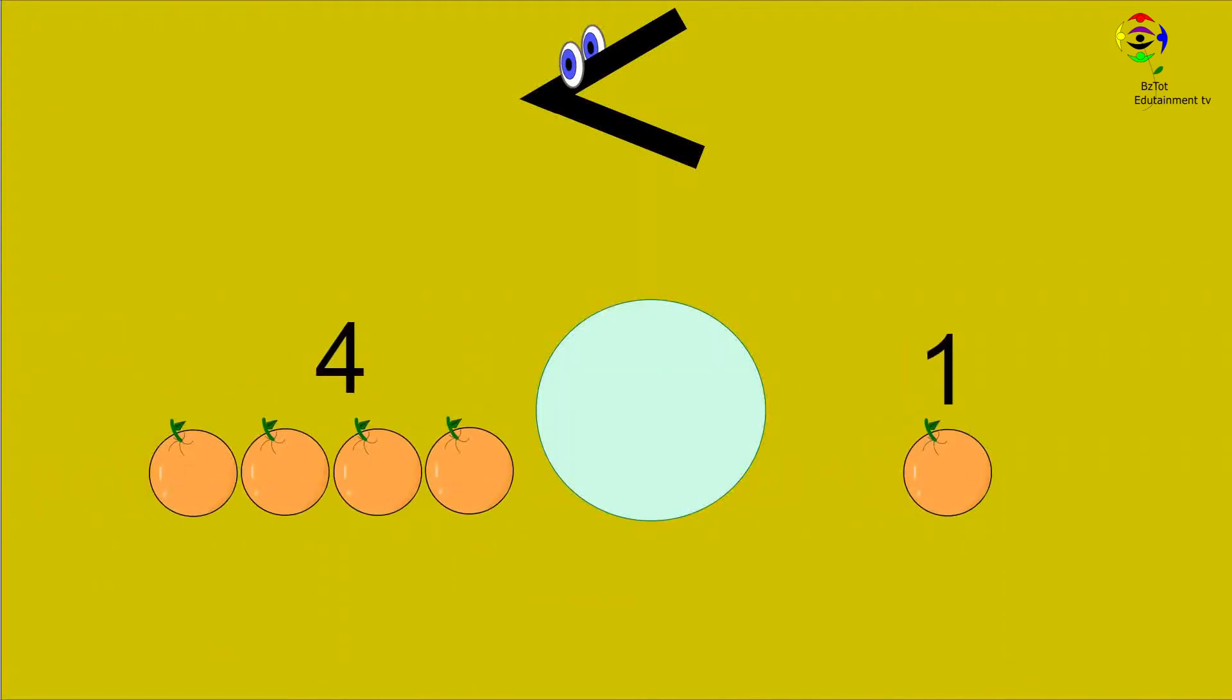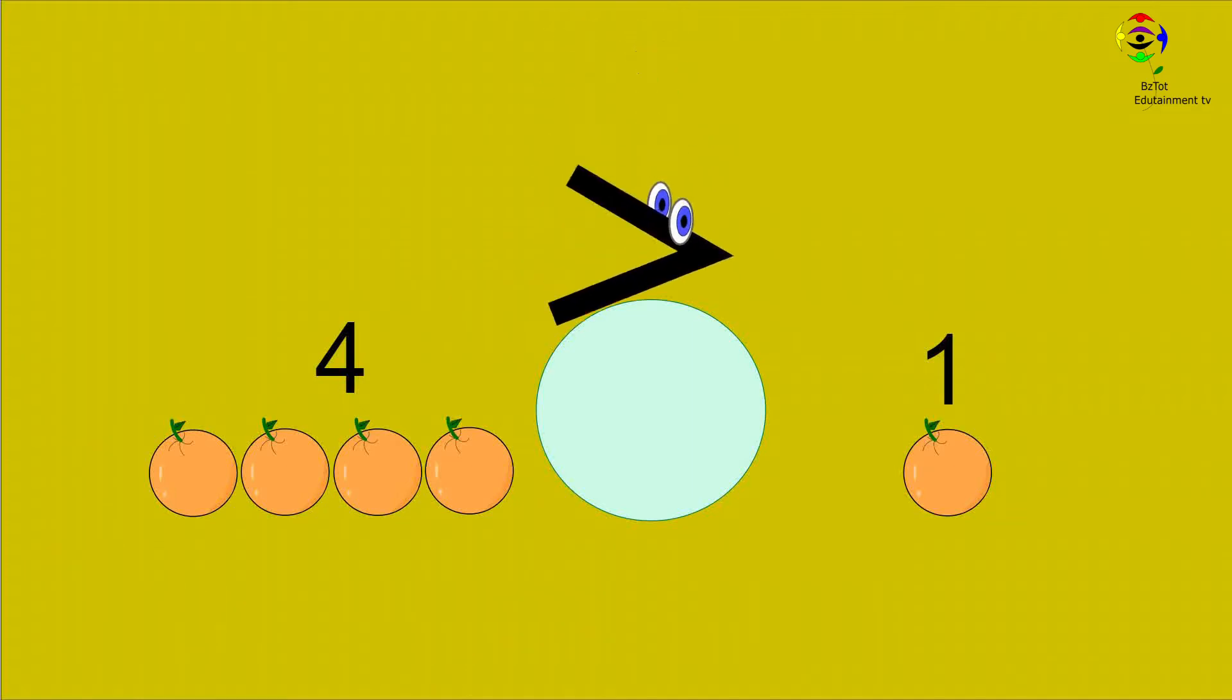We have four oranges and one orange. Four is more than one. Therefore, four is greater than one. Mr. Sign is facing the bigger number.